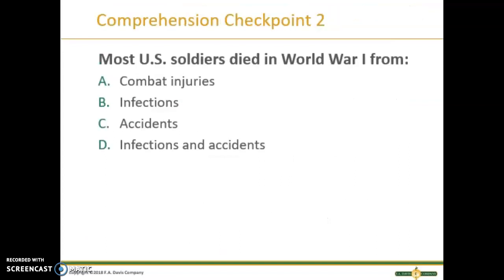Here's another checkpoint: Most U.S. soldiers died in World War I from what? The correct answer is D — infections and accidents. More U.S. soldiers died in World War I from infections and accidents than from actual combat injuries. The mass production of penicillin then minimized the number of deaths from infection during World War II.